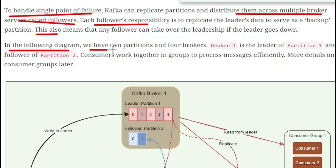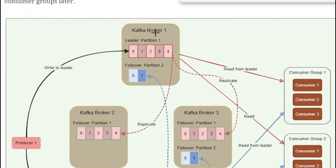In this diagram, we have two partitions and four brokers. Broker 1 is the leader of partition 1 and a follower of partition 2. We have partition 1 on broker 1, the same partition 1 on broker 2, and similarly another partition on broker 3. The same partition is available in three places, but broker 1 is the only leader. If something goes wrong and broker 1 goes down, you will not lose the data because the same data is also present in broker 2 and broker 3. The leader will then be shifted to one of the remaining two brokers — either broker 2 or broker 3 will become the new leader.